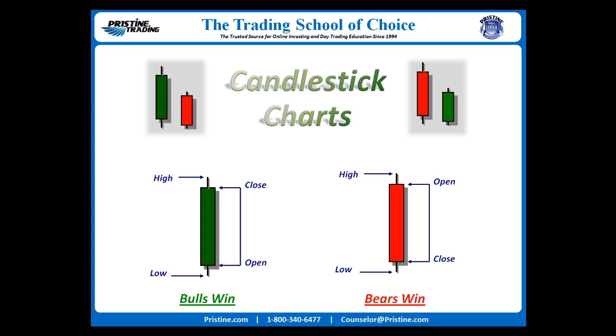Those highs and lows can be called tails, or shadows, or wicks, whichever you prefer. At Pristine, we typically call them tails — topping tails and bottoming tails.